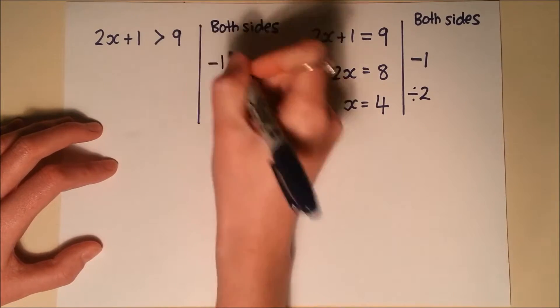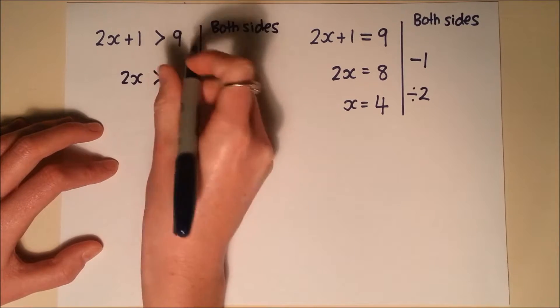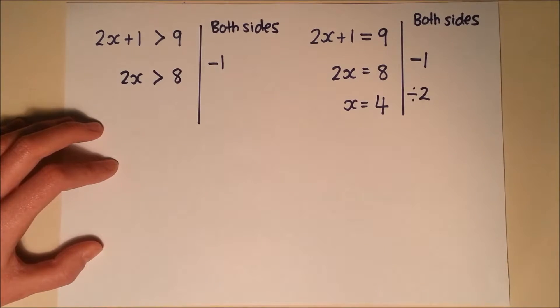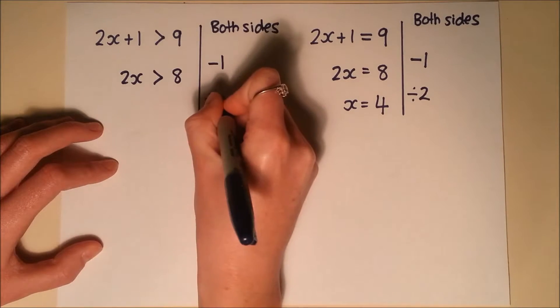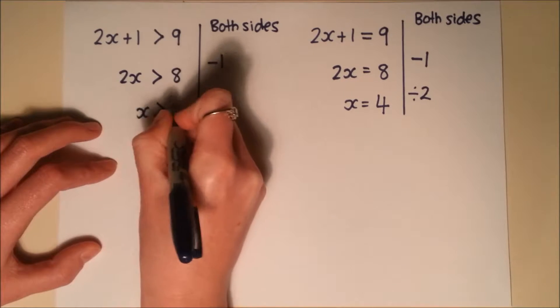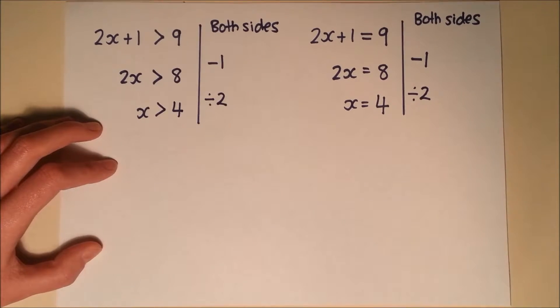So I've got, take away 1. So 2x is greater than 9 take away 1, 8. And then exactly the same again. Divide by 2, 8 divided by 2 gives me 4. So my answer is x is greater than 4.